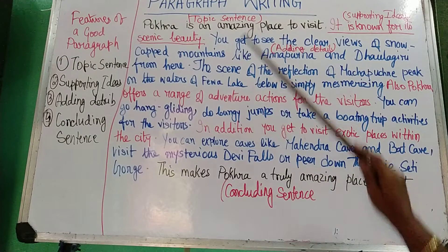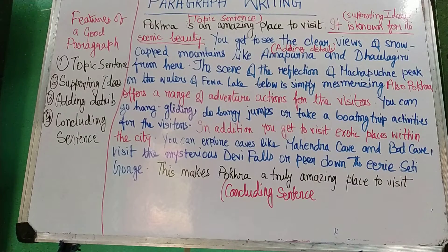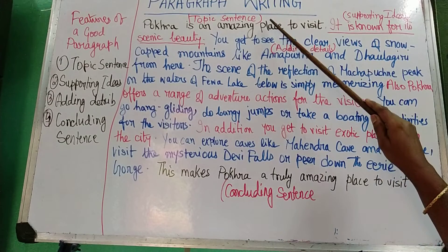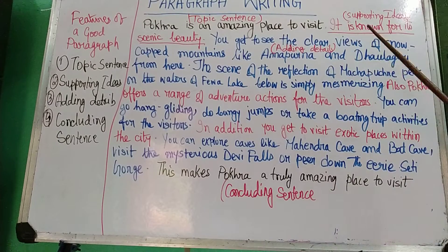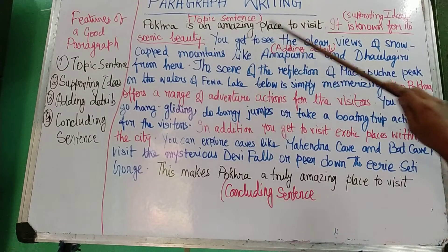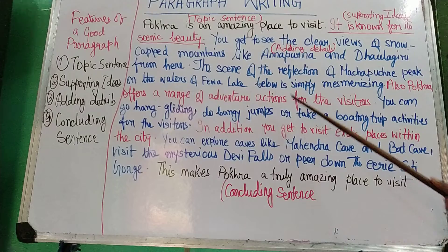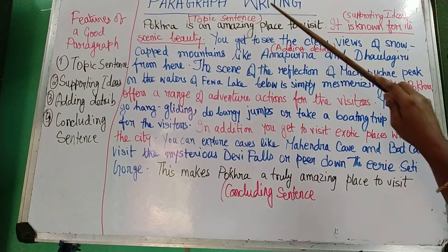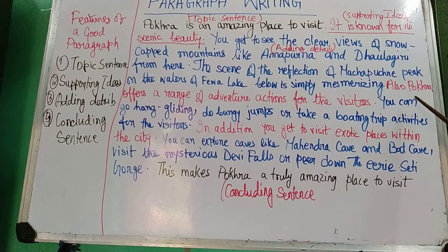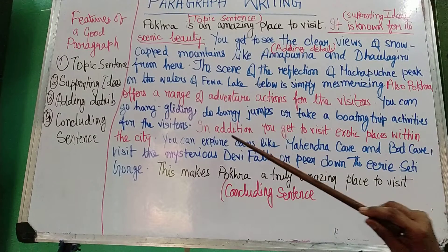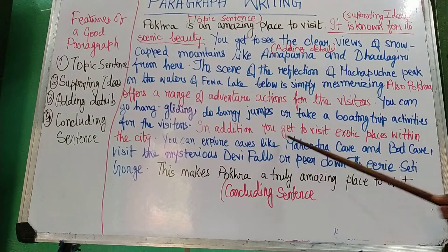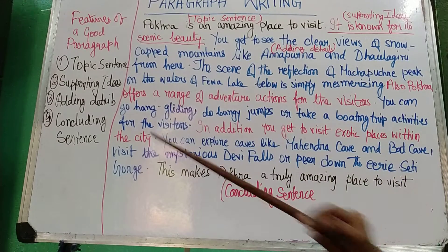Supporting ideas are the points that justify the topic sentence — they speak about why the topic sentence is correct. For Pokhara, the supporting ideas are: first, it is known for its scenic beauty; second, Pokhara offers a range of adventure activities for visitors; and third, in addition, you get to visit exotic places within the city.